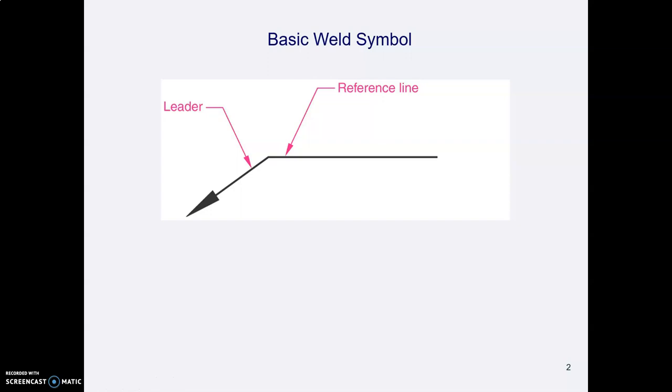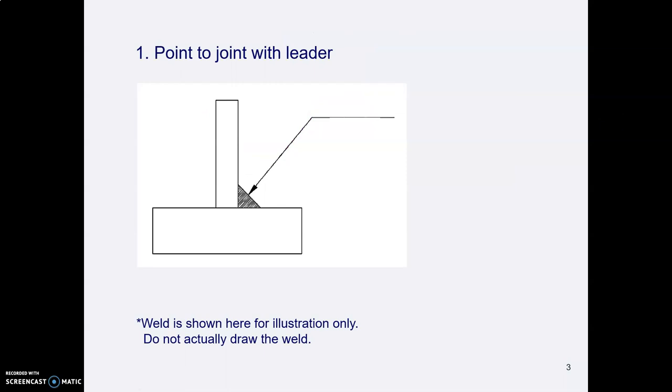When you put a symbol on your drawing saying put a weld here, you start out with a basic leader and a horizontal line an inch long or more. So there's the start of your symbol and you point at the joint. I'm afraid that this is out of a book where they were trying to illustrate what the weld looks like. When you do a drawing, you never draw the weld. You just draw the two pieces of metal before they were welded and you point at the joint with your arrow.